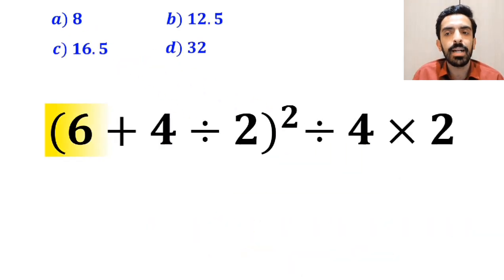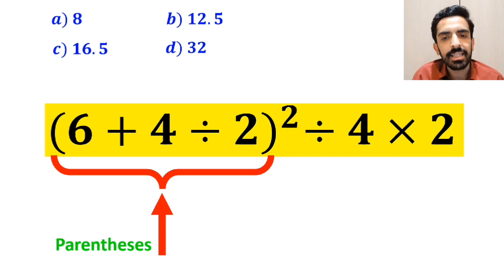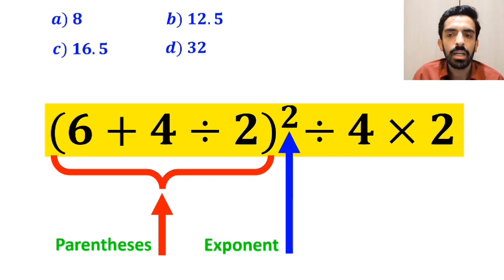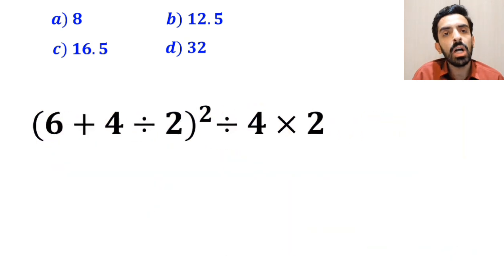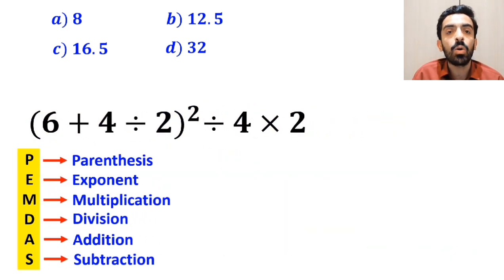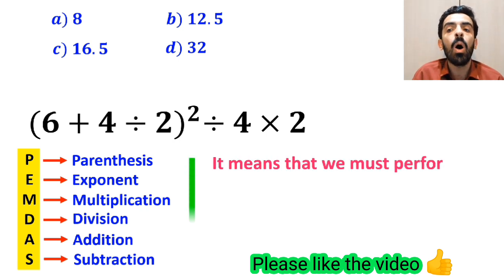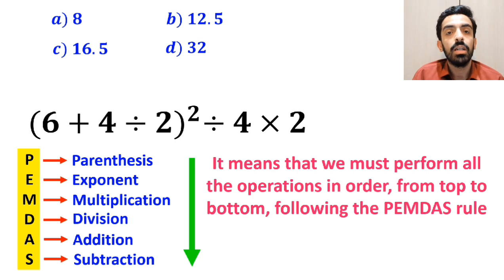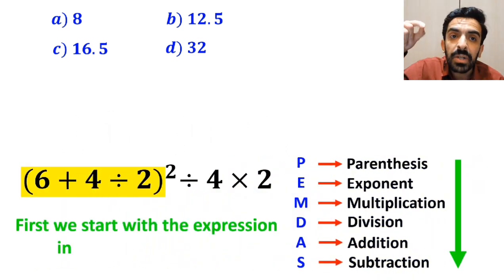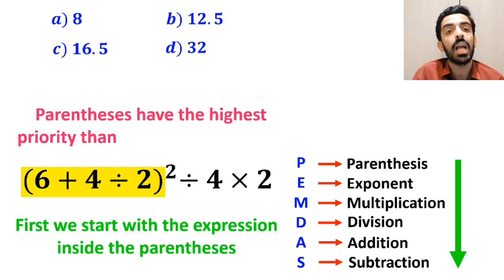Now let's go step by step together and solve this question correctly. As you can see on the screen, in this expression, first we have parentheses, then an exponent, followed by a division sign, and finally a multiplication. To solve this question, we need to go step by step exactly according to the PEMDAS rule, performing all operations in order from top to bottom. First, we start with the expression inside the parentheses, because parentheses have the highest priority.